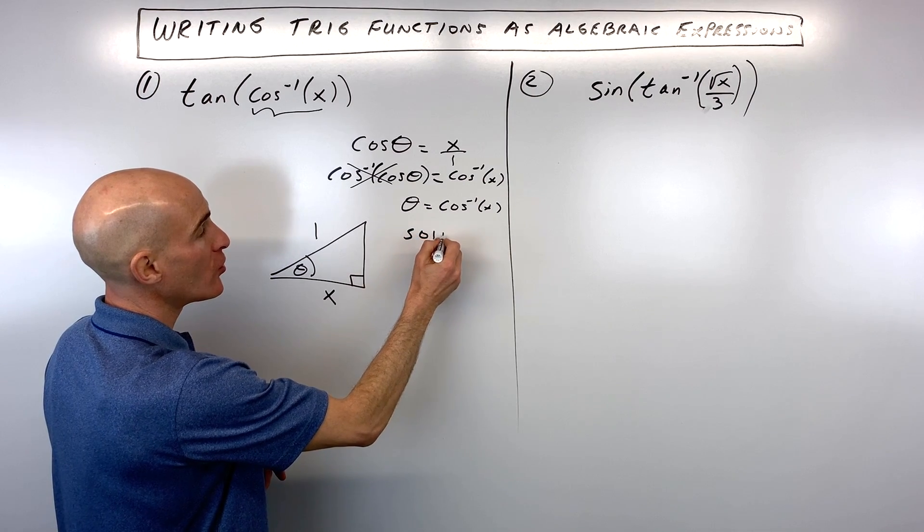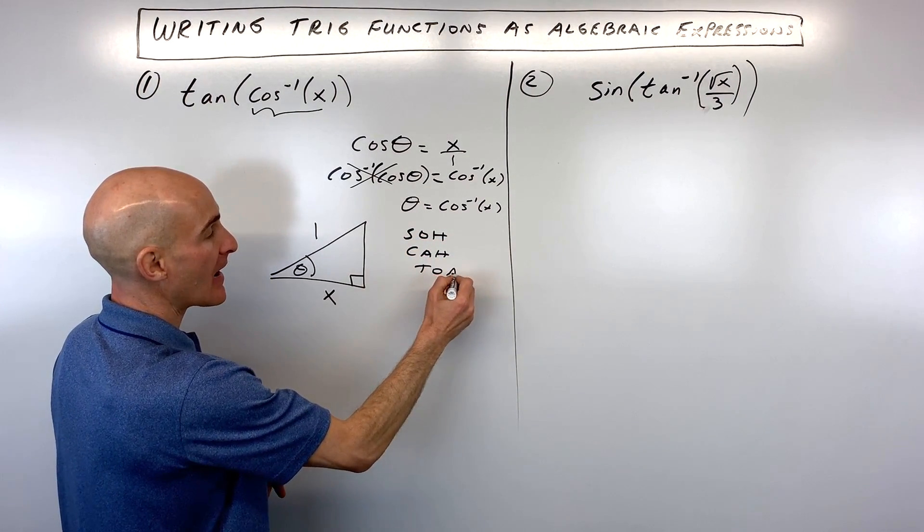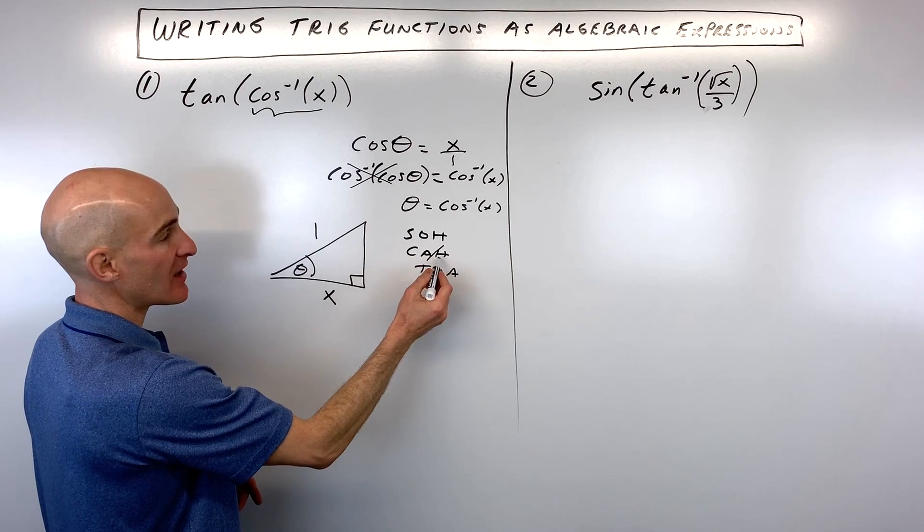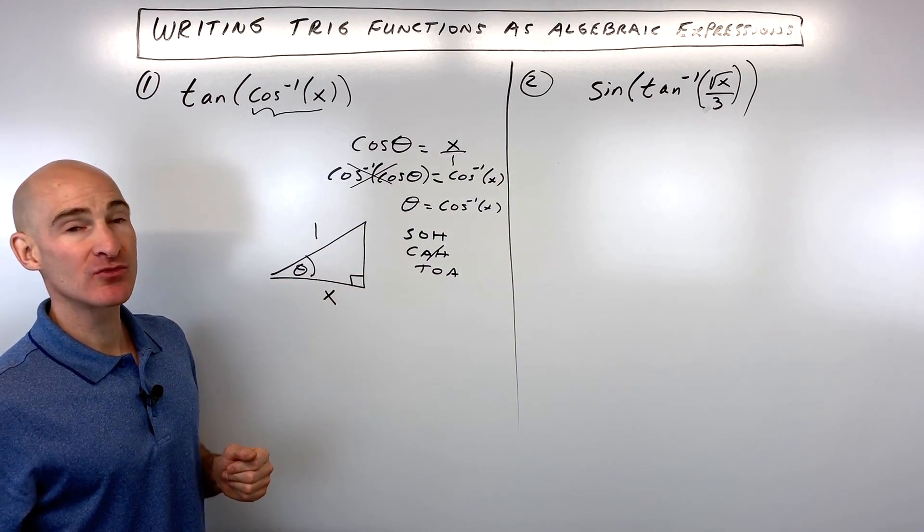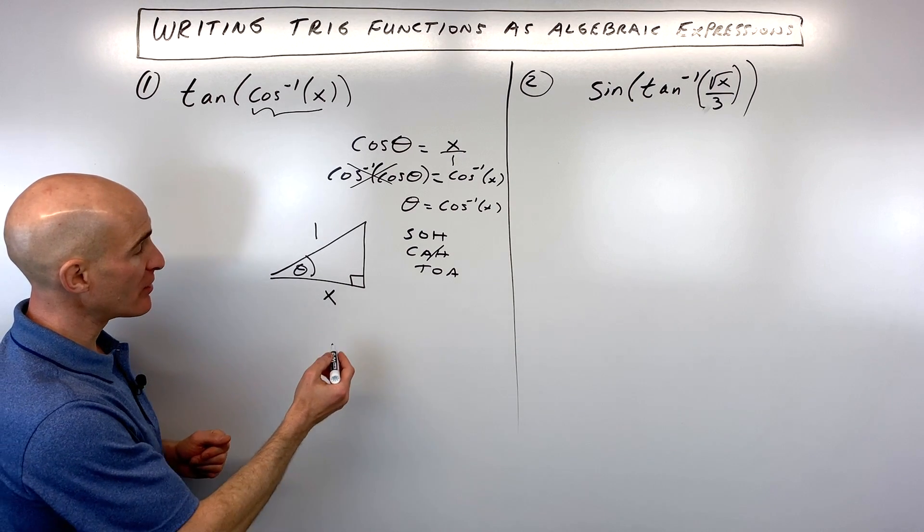Remember the SOHCAHTOA acronym? So cosine is adjacent divided by hypotenuse. But now what we want to do is we want to find that missing side in this right triangle. And we can use the Pythagorean theorem to do that.